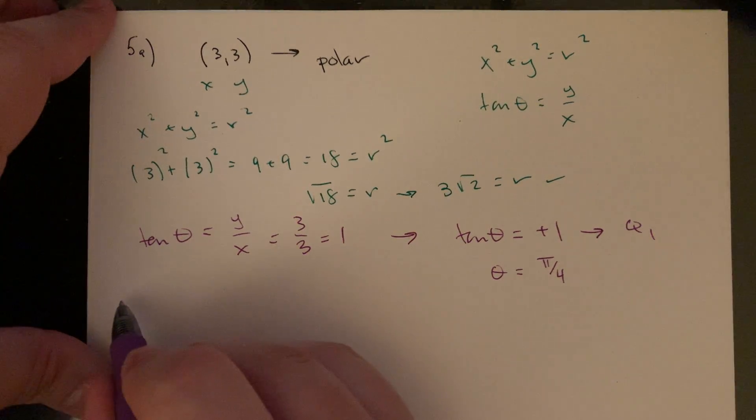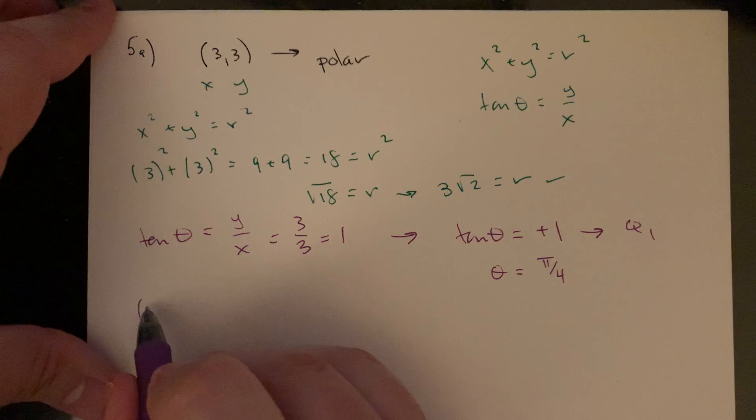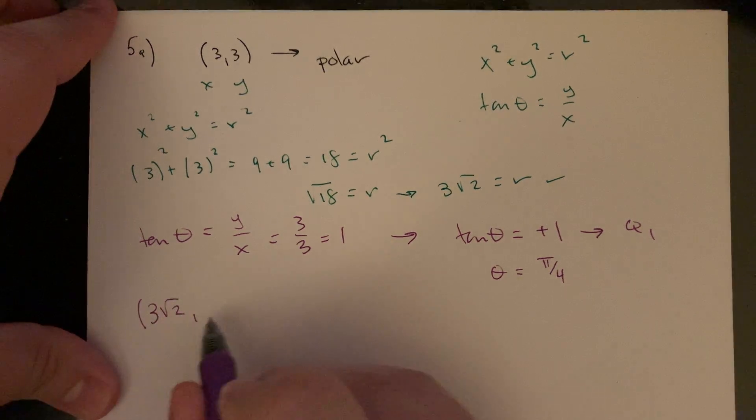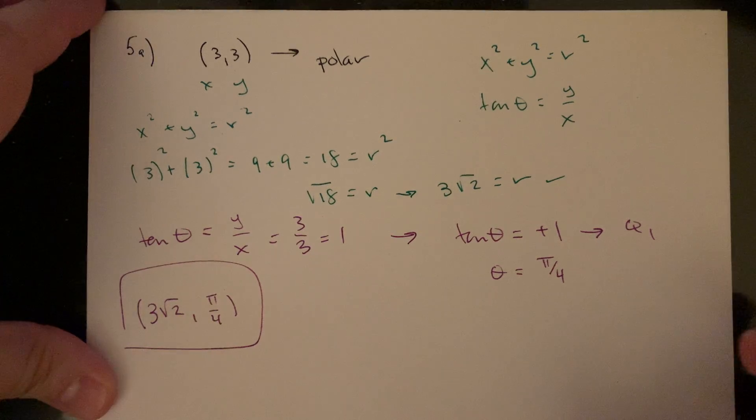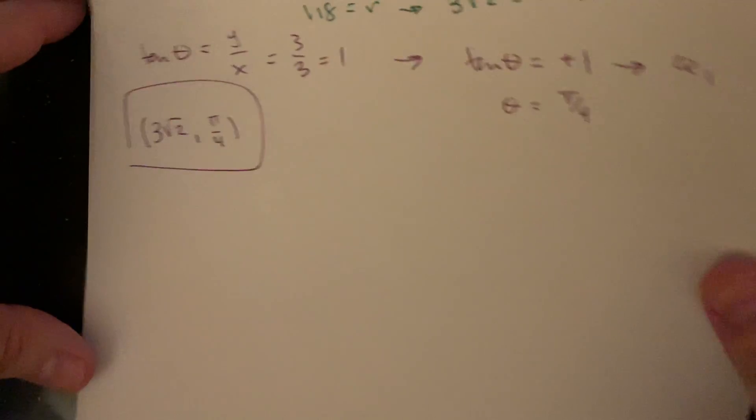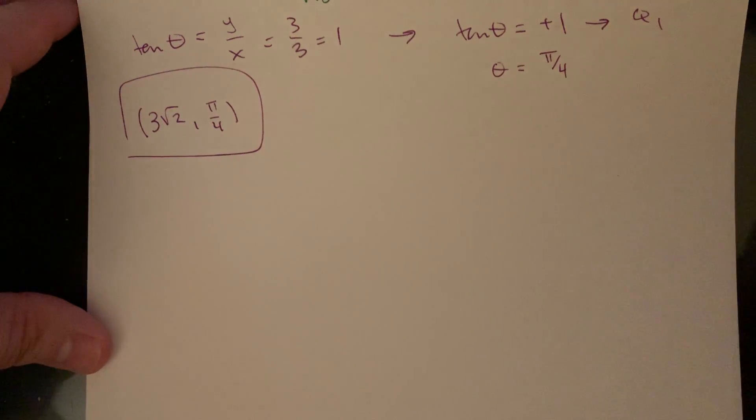So the value for this as a polar point is going to be 3 root 2 and then the angle is pi over 4. So that's going to be our point for A. Let's keep it going.